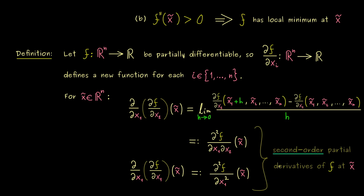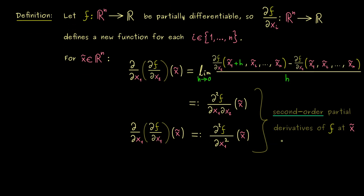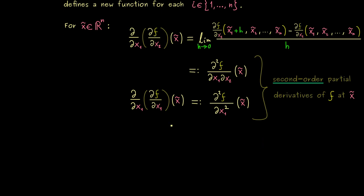By knowing this, you shouldn't have any problems going to even higher-order partial derivatives, which we will need when we discuss Taylor's theorem in the multivariable setting. Here we first focus on second-order partial derivatives. One important thing to note is that in general the order here matters — it is definitely possible that changing the order of partial differentiation gives a completely different result. However, in many applications and examples the order does indeed not matter, which is an important theorem we will discuss in another video.